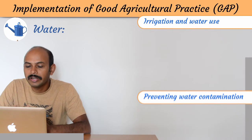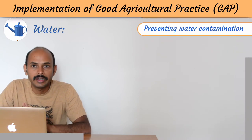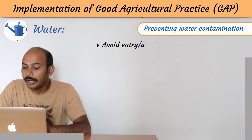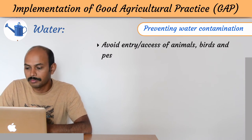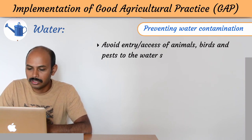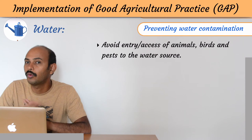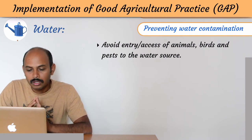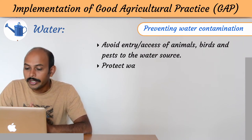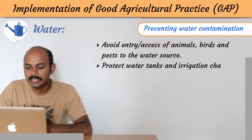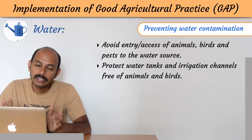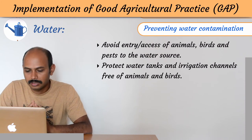Next is preventing water contamination. Avoid entry of animals, birds, and pests to the water source. Protect water tanks and irrigation channels from animals and birds — all these things should be kept away from animals.